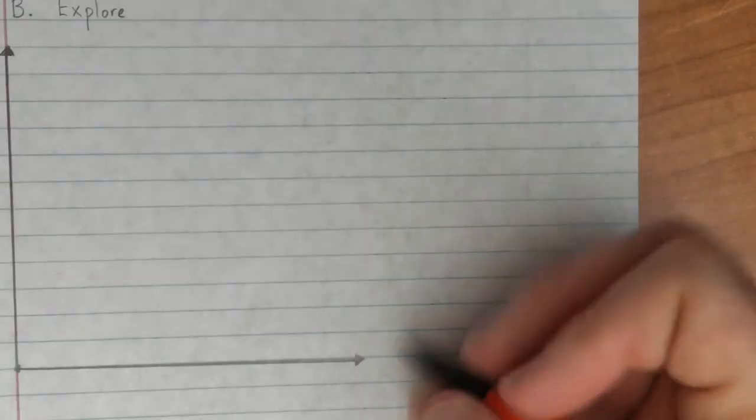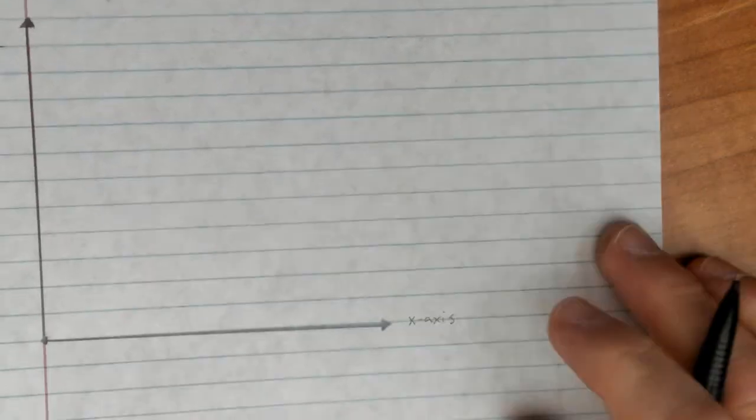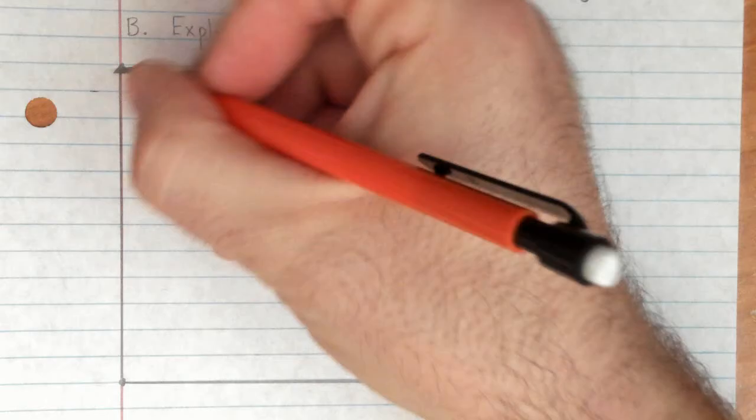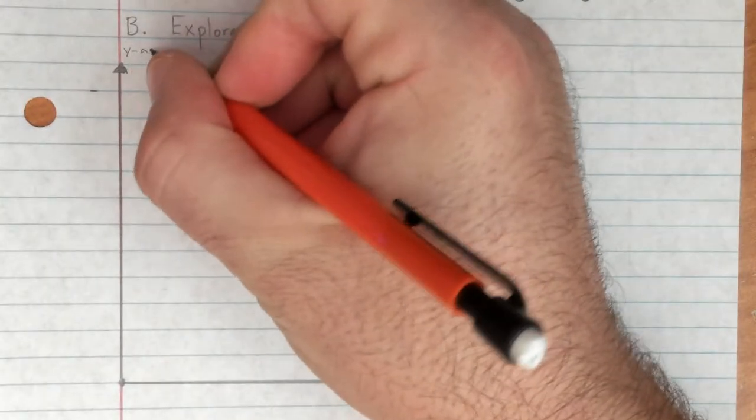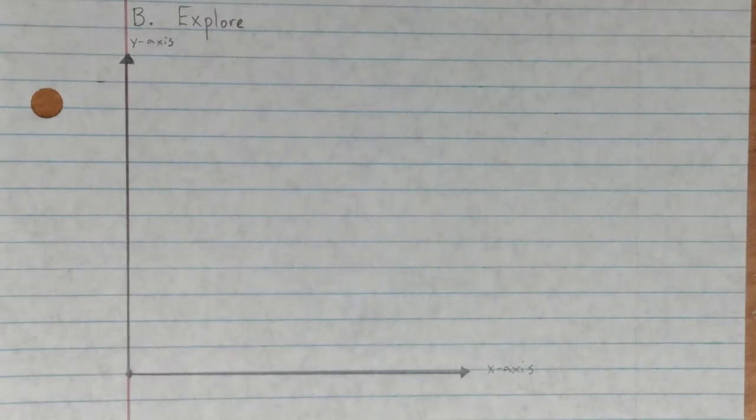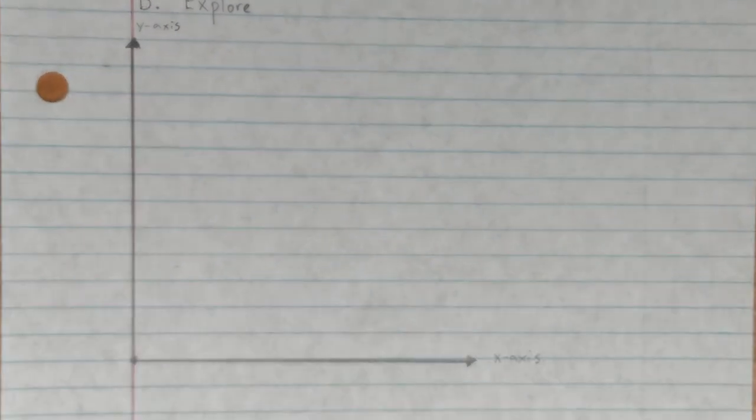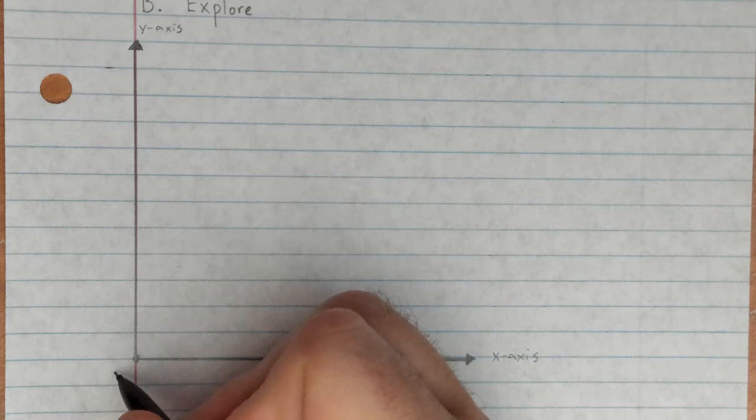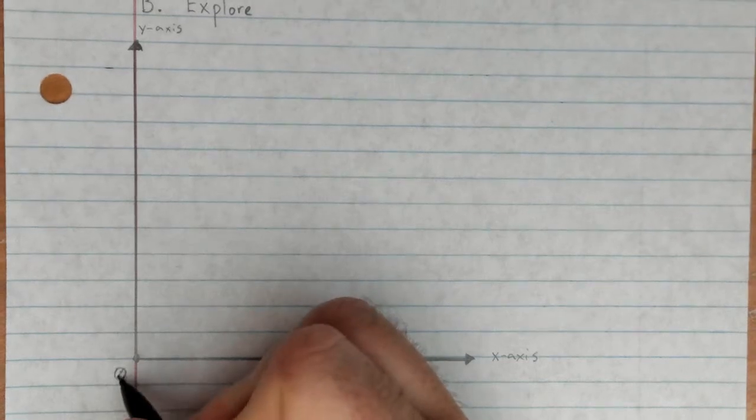Ideally, graph paper would be the way to go with this, but since we're writing our notes, and most of our notes are on line paper, we will make do. Now like I said before, this is your x-axis going straight across horizontally, and up here this is your y-axis, it climbed up going vertically. Down here in this corner, this is our origin, we mark it with a zero.